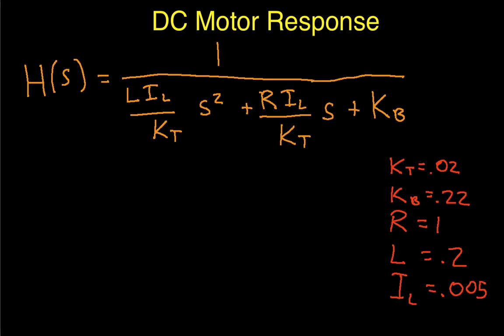In this video, we will use the transfer function of the DC motor, which was derived in a previous video and is given by this expression for H of S, to determine the output of the motor in response to an input of a unit step function.